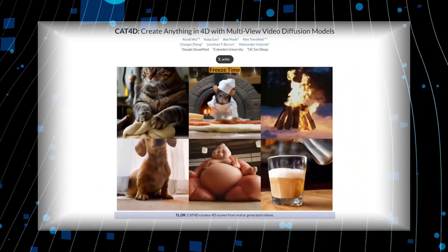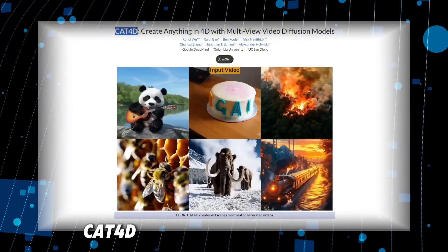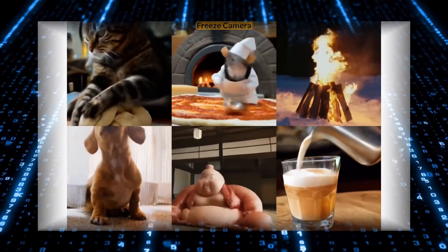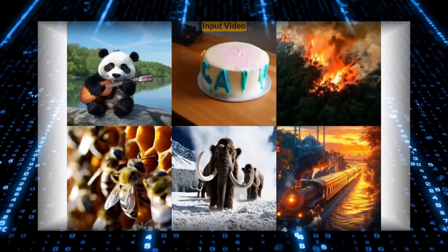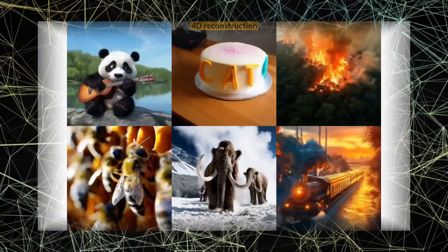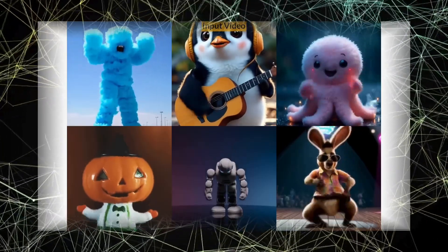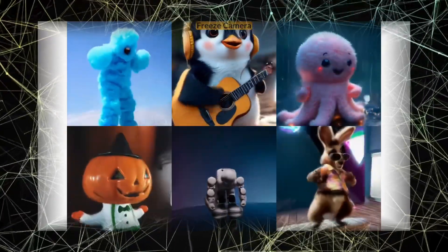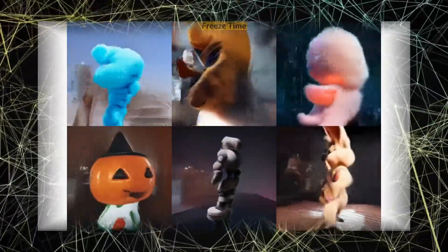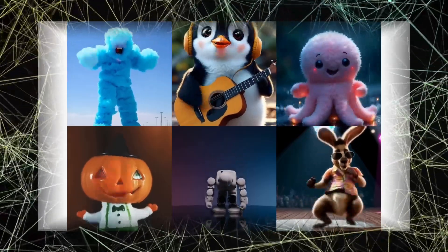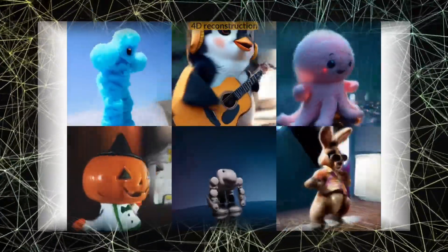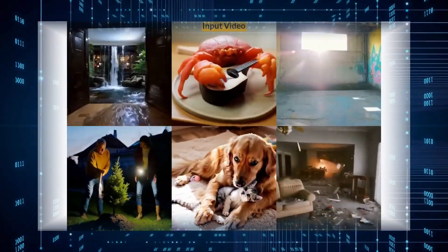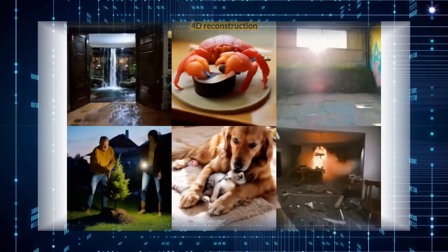Next up is something truly mind-bending: Cat4D from Google DeepMind. This AI takes a standard 2D video and generates a full 4D scene from it, meaning you can view the video from different perspectives. They've released some examples, and it's remarkable how consistent everything looks across the entire video. Creating a 4D scene from a single 2D video is no easy feat — the AI has to infer unseen information, like what the back of a character looks like. With tricky camera movements like a full orbit, there might be some flaws at the back, but with slight panning or small camera adjustments, the results are incredibly consistent.